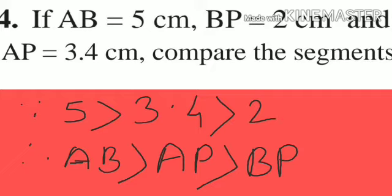So, 5 is greater than 3.4, and 3.4 is greater than 2. If you compare the values, then you can find AB is greater than AP, and AP is greater than BP. So, this is your answer.